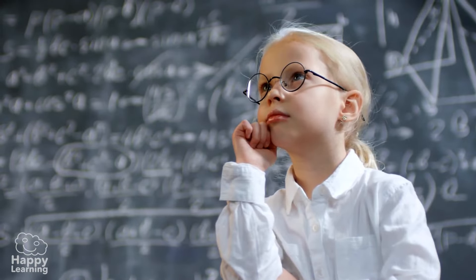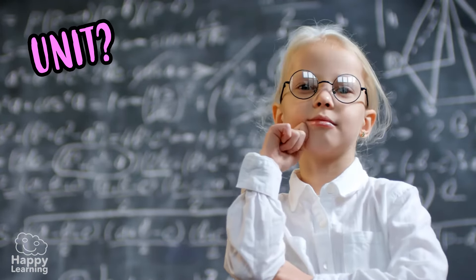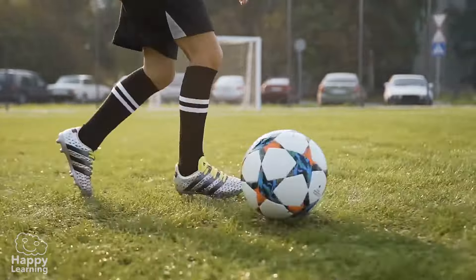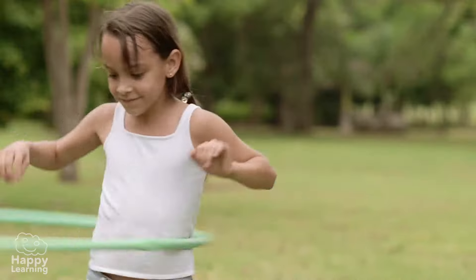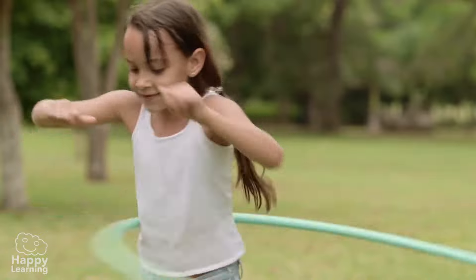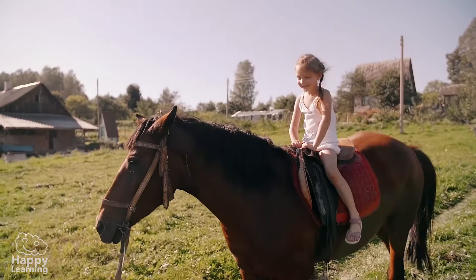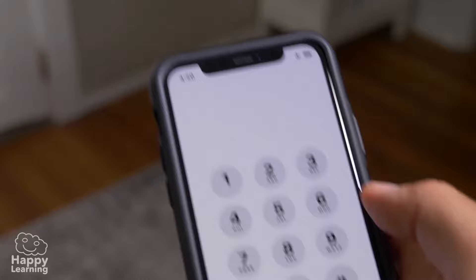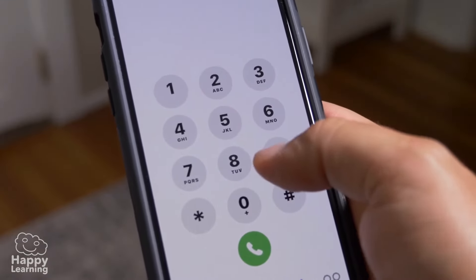Do you know what a unit is? It's very easy. Each element is called a unit. It could be anything — for example, a toy, a tree, or an animal. The units are represented by single digit numbers.